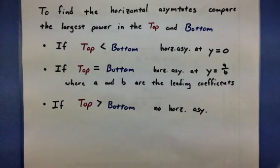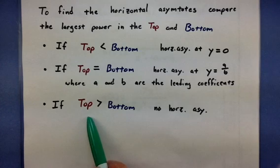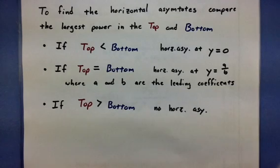Now, the last one happens if the top power is actually larger than the bottom power. In cases like this, there is no horizontal asymptote. It might be a slant asymptote or even a quadratic asymptote, but whatever it is, it is not horizontal.